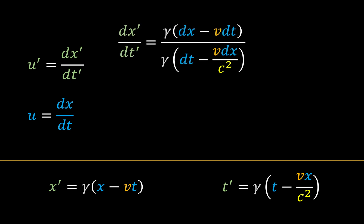And from here it's just algebra. We know that dx' by dt' equals this expression here, so if we just cancel out the gammas and differentiate both the top and bottom expressions with respect to t, we get this equation here.